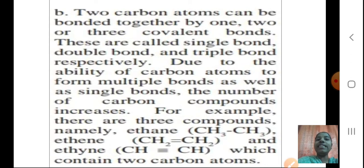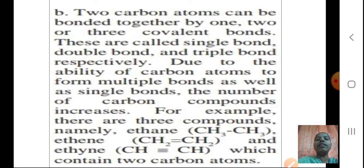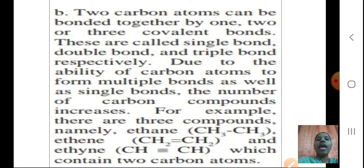Ethane is CH3–CH3 with a single bond. Ethene is CH2=CH2 with a double bond. Ethyne is CH≡CH with a triple bond. All three contain two Carbon atoms. If you take the two carbons with a single bond you get ethane; if you make it a double bond it becomes ethene; and if you make it a triple bond it becomes ethyne.